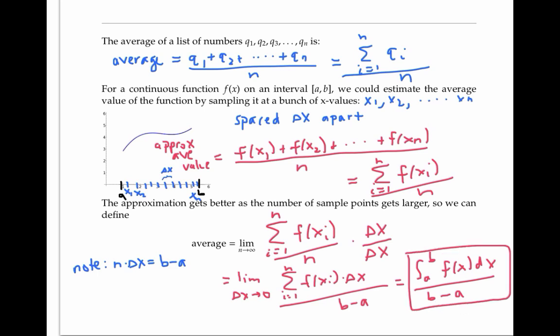So the average value of the function is given by the integral on the interval from a to b, divided by the length of the interval. Notice the similarity between the formula for the average value of a function and the formula for the average value of a list of numbers: the integral corresponds to the summation sign, and the length of the interval b minus a corresponds to n, the number of numbers in the list.